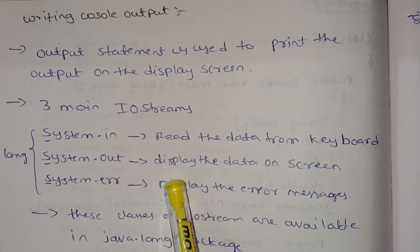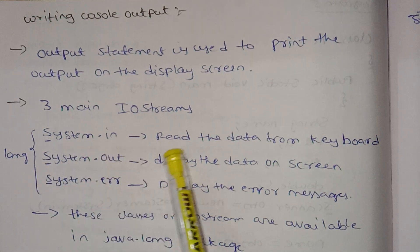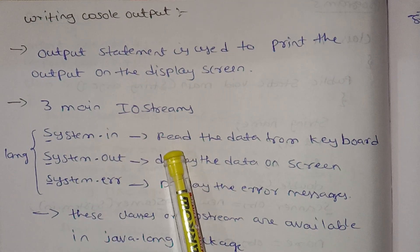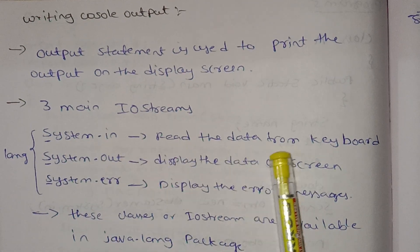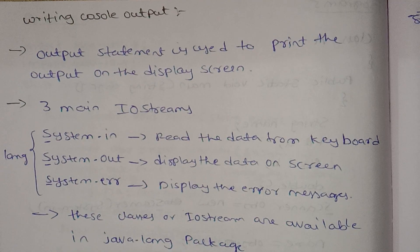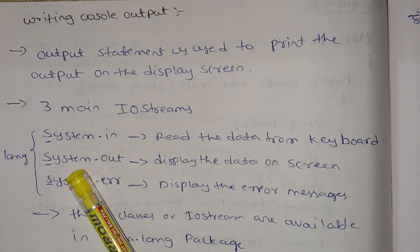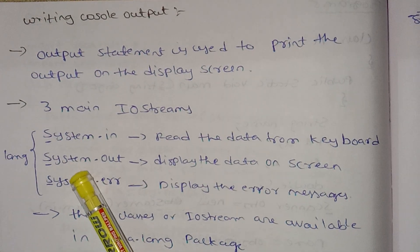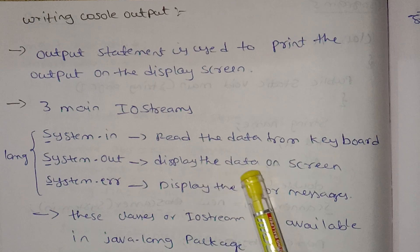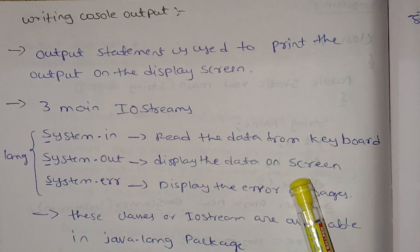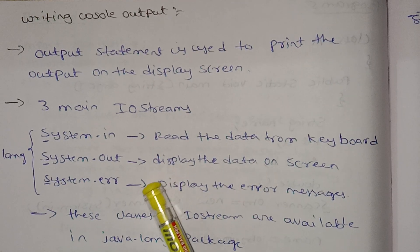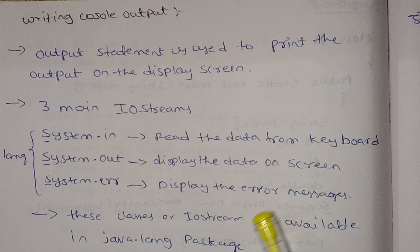system.in is used to read the data from the keyboard. system.out is used to display the data on the screen.